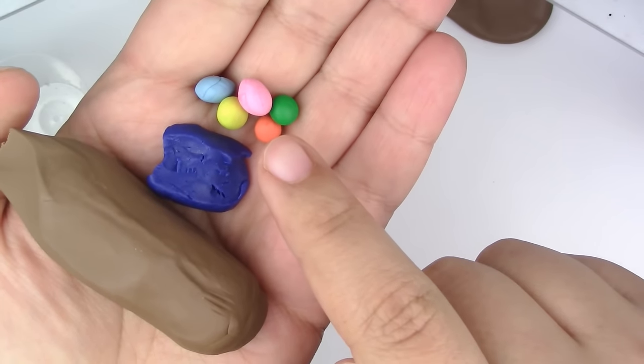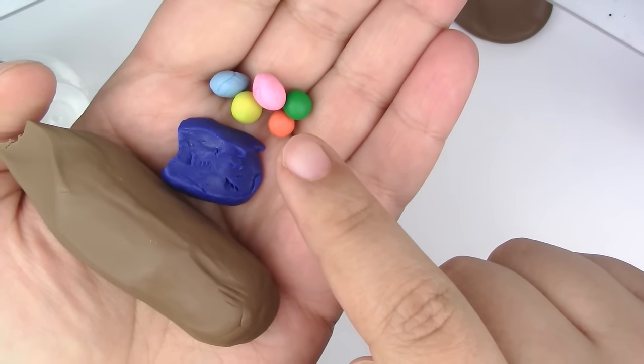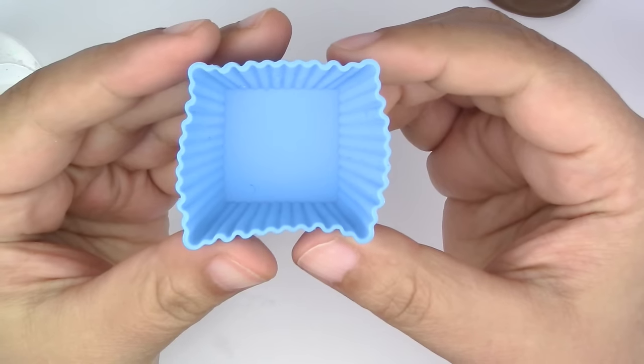Brown, blue, and small bits of color of polymer clay. All these are from Sculpey. Sand, all-purpose glue, a small mold, your resin kit.